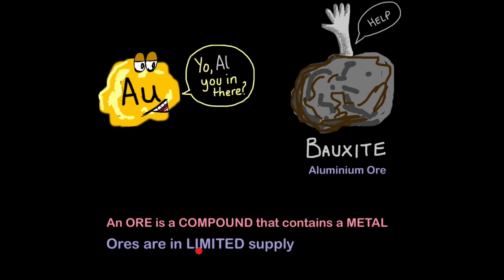Ores are in limited supply. So for example, iron ore is iron oxide where iron reacts with oxygen. Aluminium ore is aluminium oxide where aluminium reacts with oxygen. We call aluminium ore bauxite. You will need to know that.